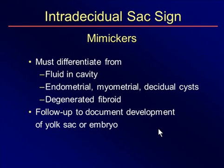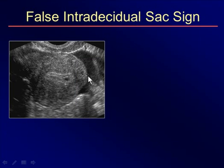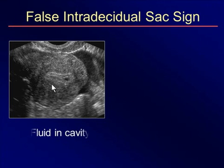There are mimickers, which is why this sign is not very reliable. You could have a little drop of fluid in the cavity, or there could be endometrial, myometrial, or decidual cysts, or a degenerated myoma. Basically, we want to follow up to document development of the embryo. Here's an example: scanning a woman with a positive pregnancy test and bleeding, I saw a little cystic structure that possibly could be the early pregnancy. But after scanning the adnexa and returning to the uterus, it was gone — it was just a drop of blood or fluid in the cavity.